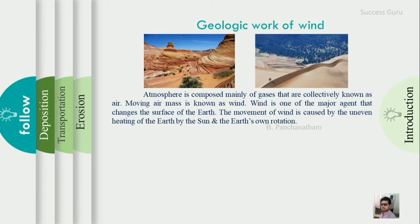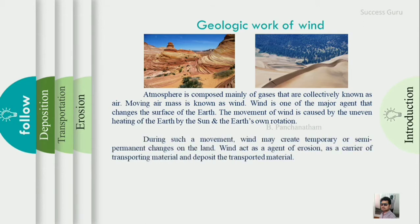Wind is caused by the differential heating of the Earth by the Sun. The temperature and pressure difference drives air movement. Wind may create temporary or semi-permanent changes on the land, acting as an agent of erosion, as a carrier of transporting materials, and depositing transported materials.